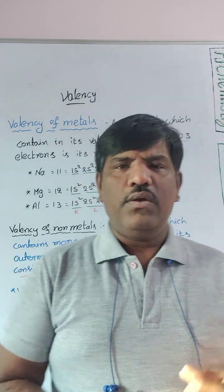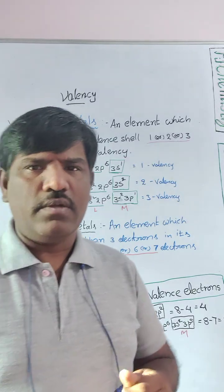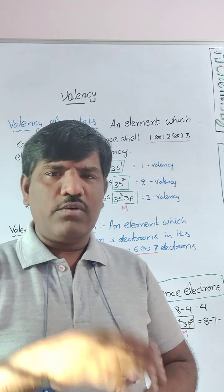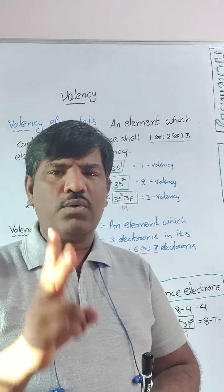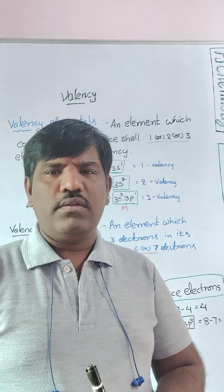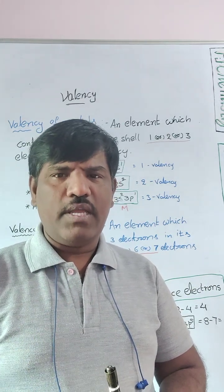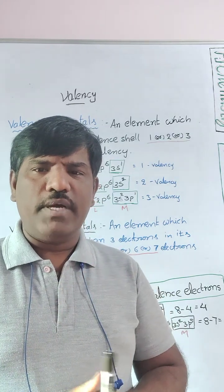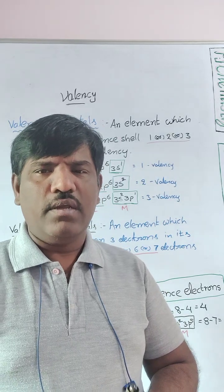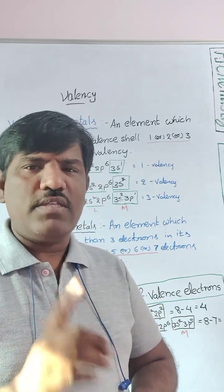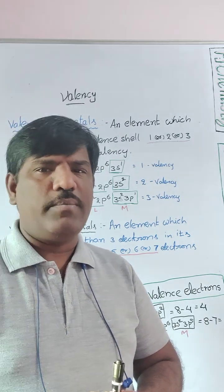Today, theoretically, we will learn how to find out Valency of Metals and Valency of Non-metals. For Metals: if you take the electronic configuration, Valence Electrons are 1, 2, or 3. Generally, Metals are all elements except Hydrogen and Helium. Hydrogen has Valence Electron 1 but it is a Non-metal, and Helium is a Noble Gas, also a Non-metal. Other than these, elements with Valence Electrons 1, 2, or 3 are Metals, and more than 3 means Non-metals.